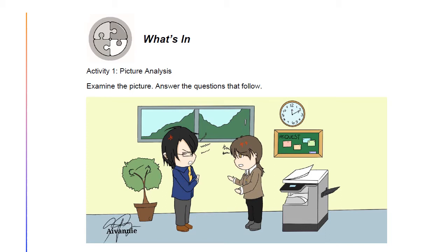Moving on to the next slide. In your module, you will see this icon saying 'What's In.' This is a brief drill or review to help you link the current lesson with the previous one. In Activity 1, it is picture analysis. You need to examine the picture and answer the questions stated in your module. Based on the image, what can you infer from the picture? You may write your answer in a sheet of paper. Another question is: how can misunderstanding be avoided at work or in school? You may write your answer in a yellow paper. Once you're done, we can now proceed to the next activity.